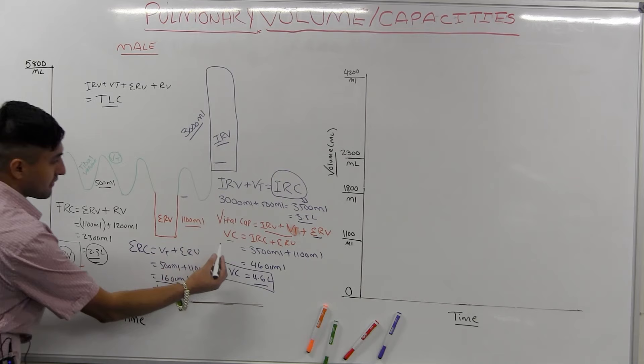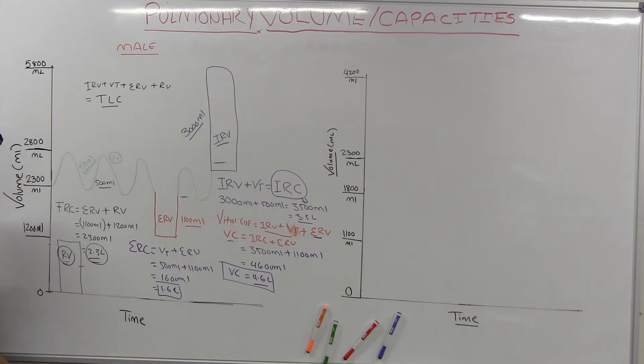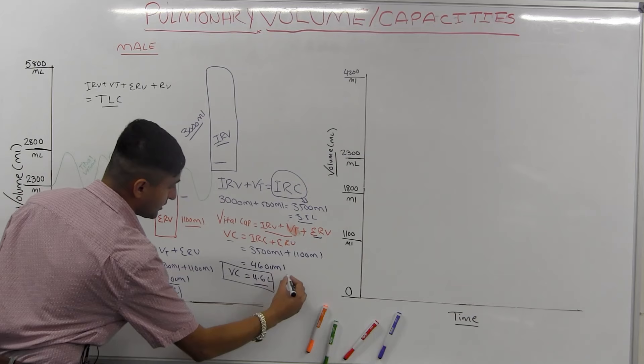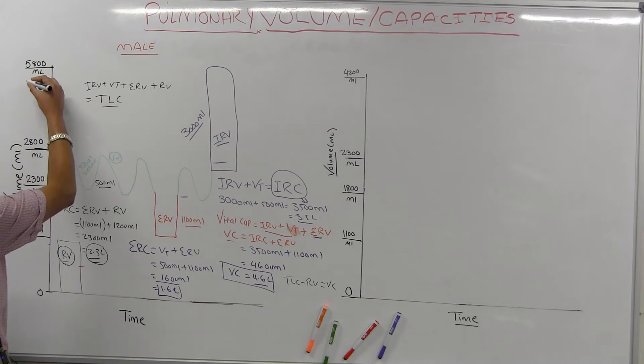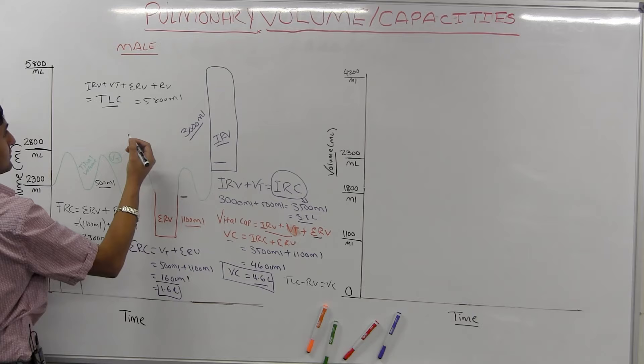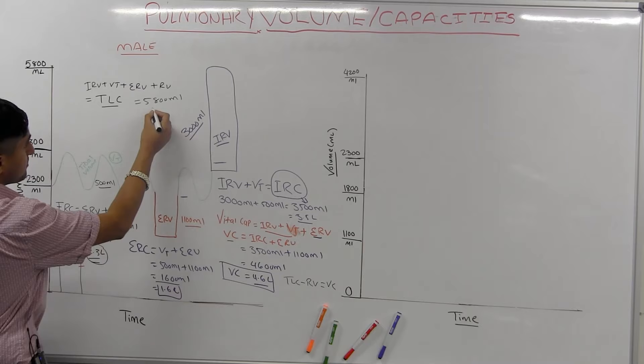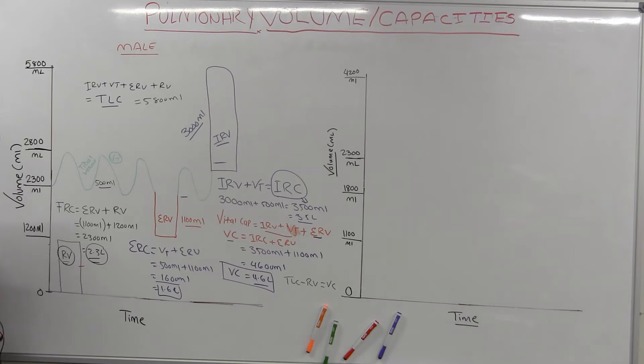There's another way to find vital capacitance: if you know total lung capacitance and residual volume, simply subtract — 5800 ml minus 1200 ml gives you 4600 ml, or 4.6 liters of vital capacitance. This is a useful alternate equation.